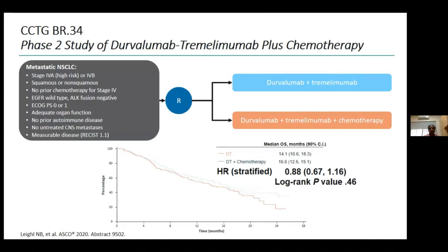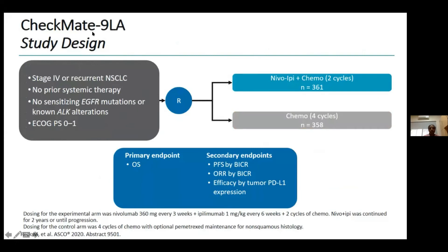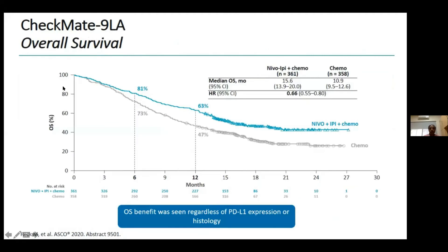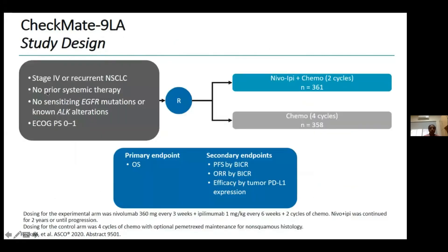The other immuno-oncology drug combination is durvalumab and tremelimumab. In the MYSTIC study (pr34), which was recently reported, sadly this study did not show benefit. People are now doing a post-hoc analysis to understand why, when all other immuno-oncology drugs did show benefit. Checkmate-9LA studied nivolumab plus ipilimumab plus chemotherapy in patients with no prior systemic chemotherapy and no sensitizing mutations.